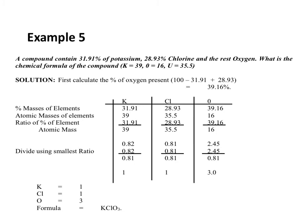That is 100 minus (31.91 plus 28.93). When you add and then subtract, you have the percentage of oxygen to be 39.16%. Now on your table, you have potassium in one column, chlorine in one column, and oxygen in another. The percentage masses of elements are: potassium 31.91, chlorine 28.93, and oxygen 39.16. The atomic masses are: 39 for potassium, 35.5 for chlorine, and 16 for oxygen.